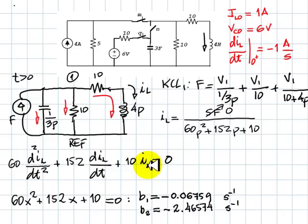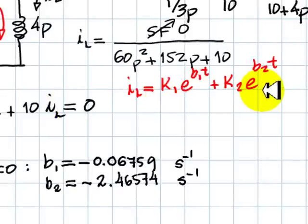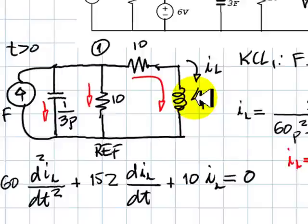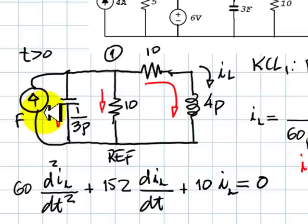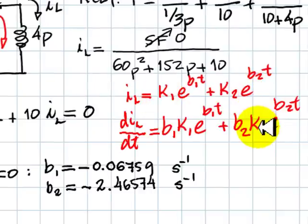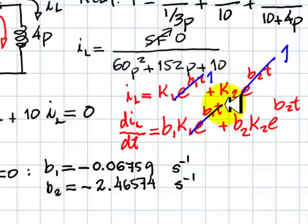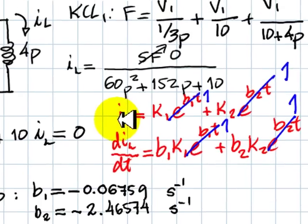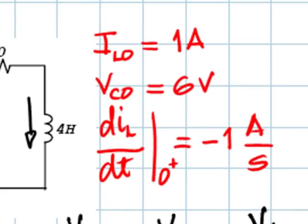And the current IL is the sum of two exponentials. This is the form of that current. Why there is no K3? Because this circuit with no real sources will have a steady state current of zero. K3 is zero for this circuit. We differentiate that. Evaluate both equations at t equals zero. If this exponential becomes one, this one becomes one as well. And the same happens with these other two. B1 and B2 are known. We computed them down here. And the value of the current IL at t equals zero is known. This is one amp.